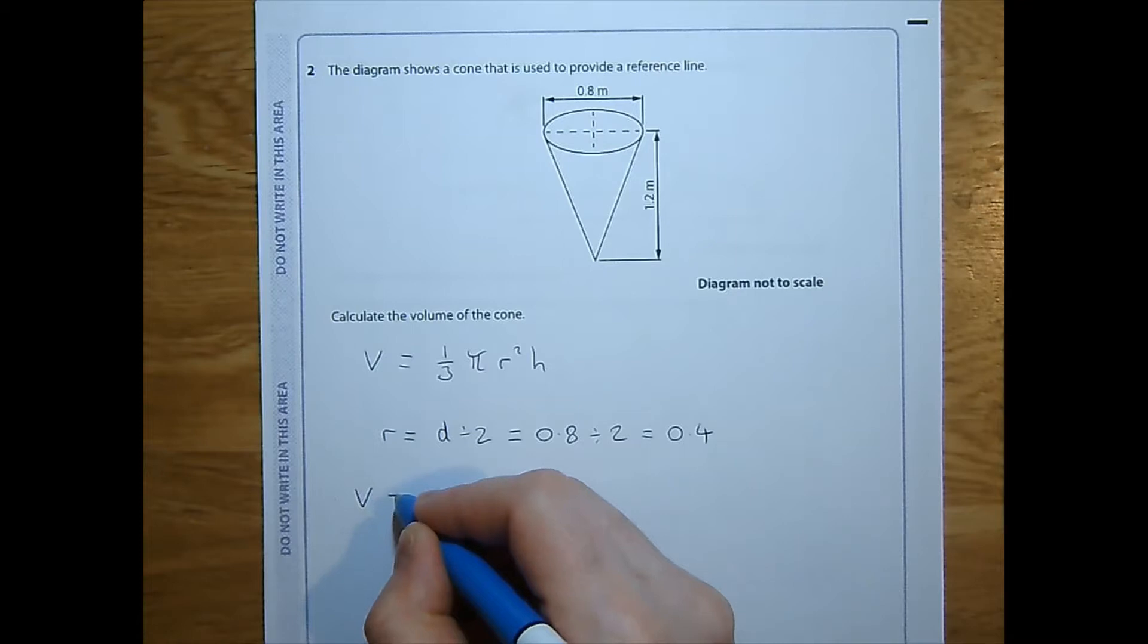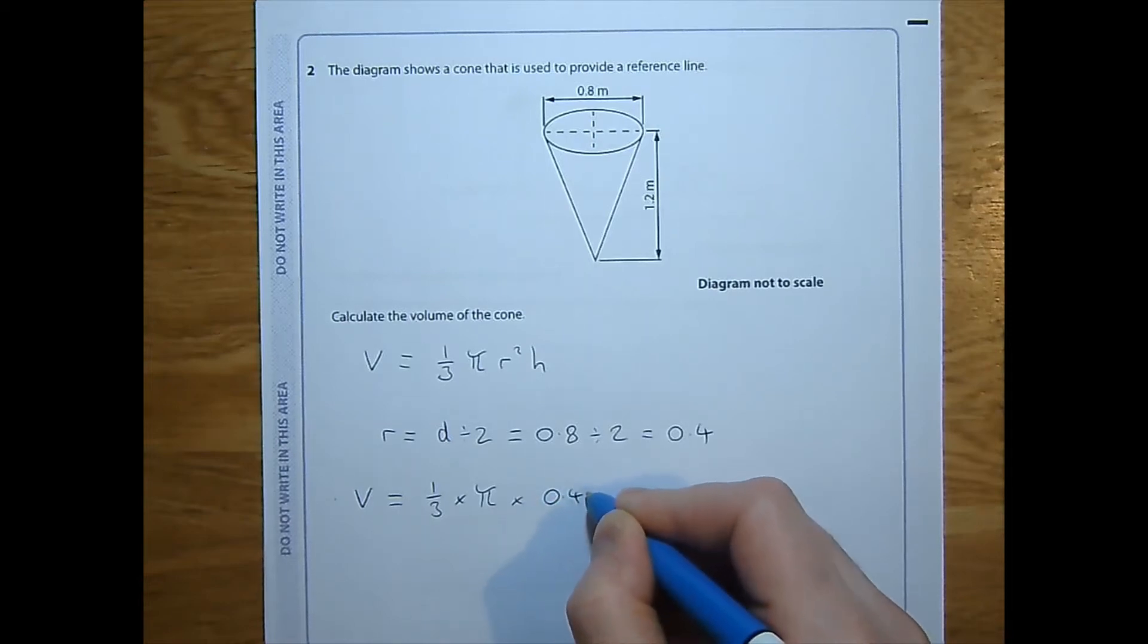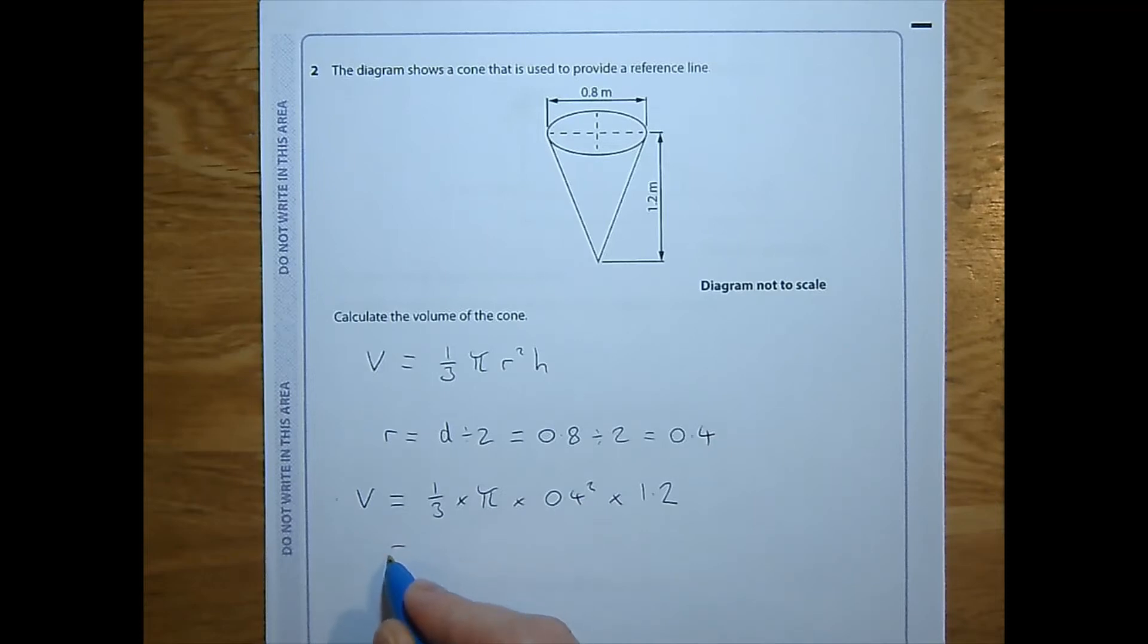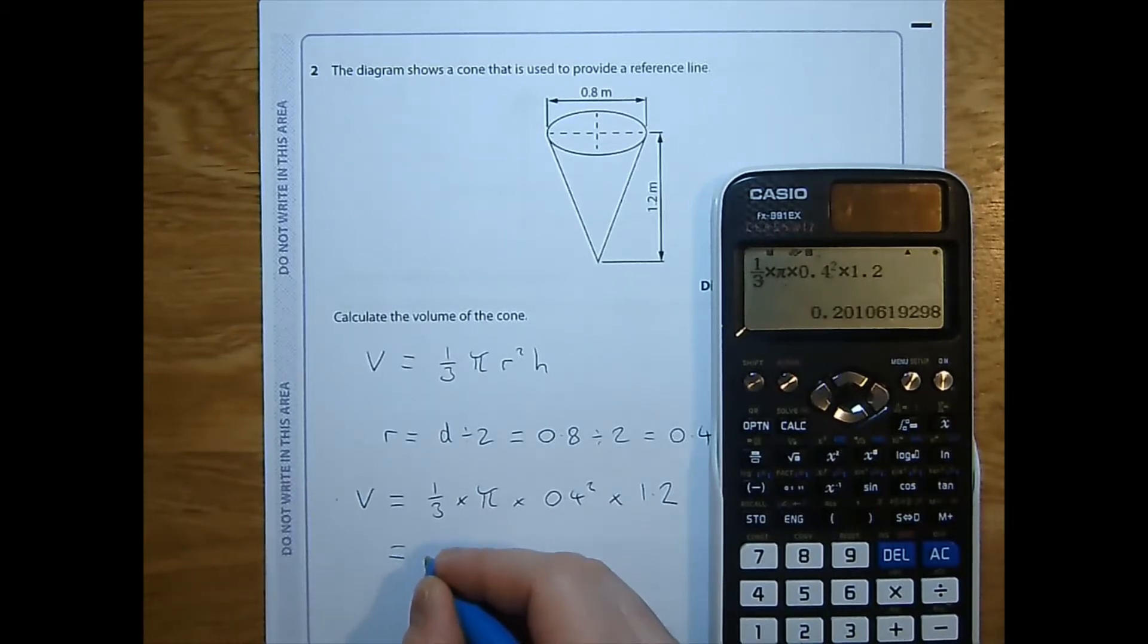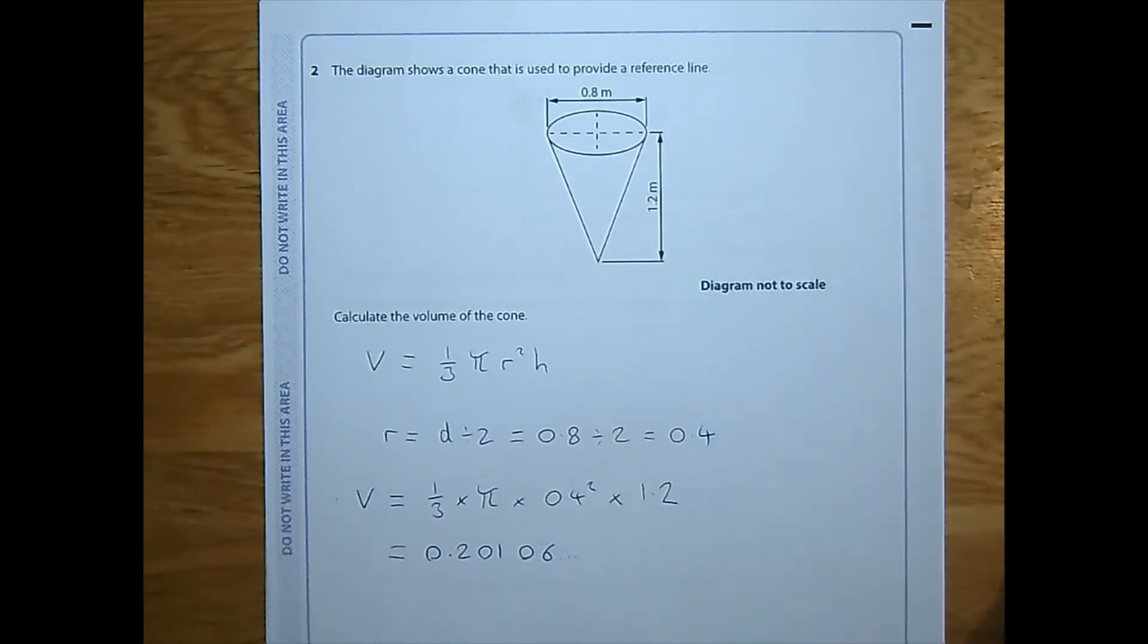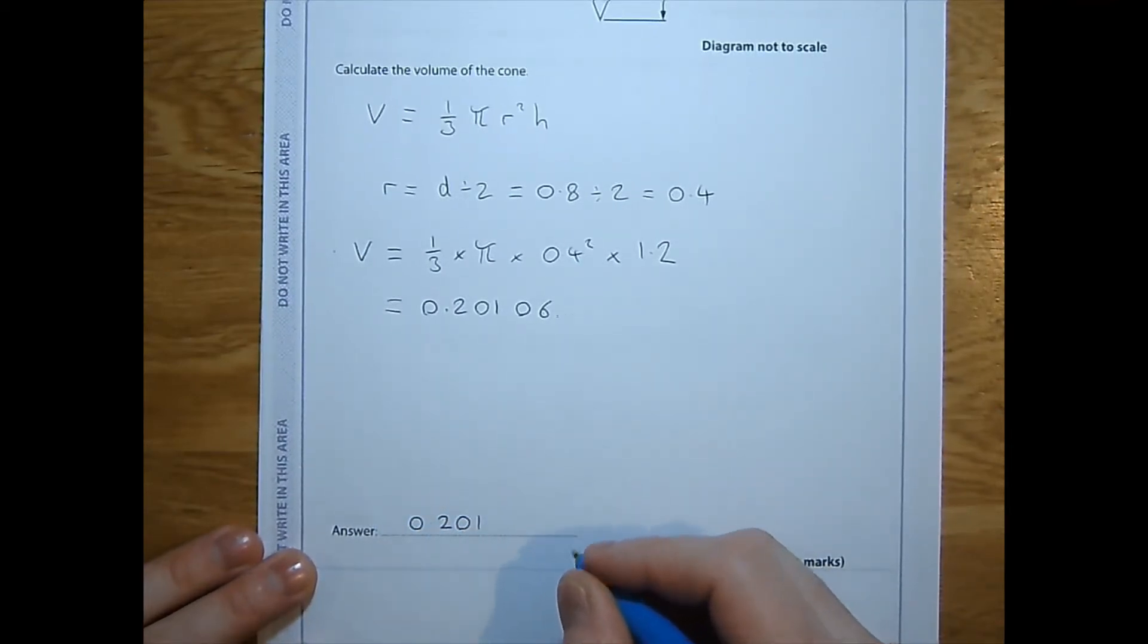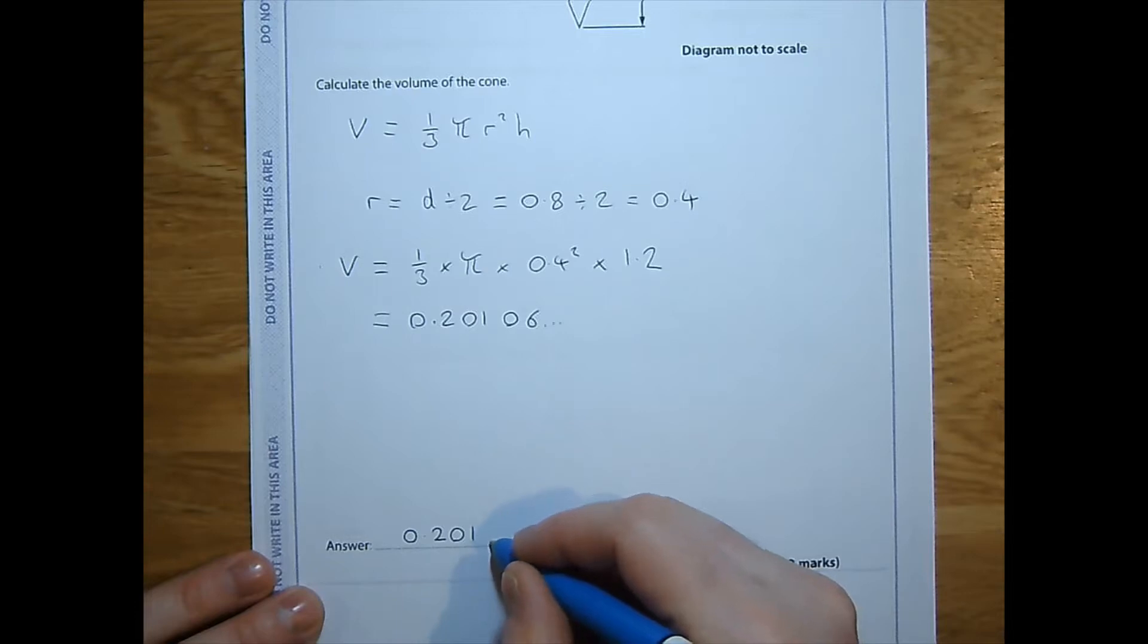So the volume is one third times pi times 0.4 squared. Was that our radius? Yes, it was. Times by the height of 1.2. So if I put all of that into my calculator as you can see I've done already here I get 0.20106 et cetera, which rounding to an appropriate degree 0.201. Now the units in this question they are metres but we're doing a volume so it will be metres cubed, and I round it to three significant figures.